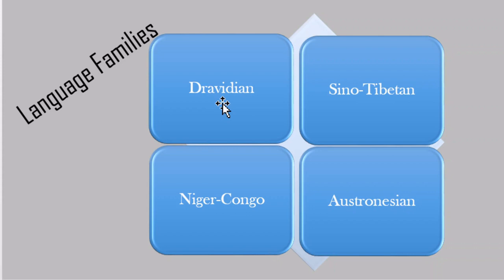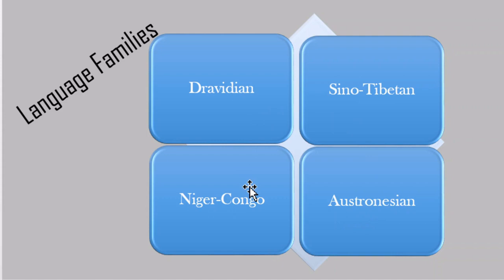We have a very big family of languages called the Sino-Tibetan languages, which contain many of the languages spoken in China, Tibet, and areas like that. We have the Niger-Congo family of languages, which is a large family spoken in different parts of Africa. Africa has, like India, more than one language family. And we have the Austronesian family, which contains languages spoken in Madagascar, in Malaysia, and in many islands of the Pacific Ocean.